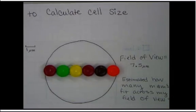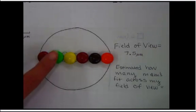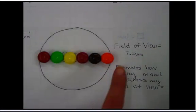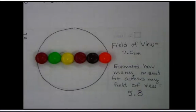And in this case, let me slide that up a bit. In this case, I have 1, 2, 3, 4, 5, almost 6. So I'm going to say 5, let's say 0.8 M&Ms fit across my field of view.